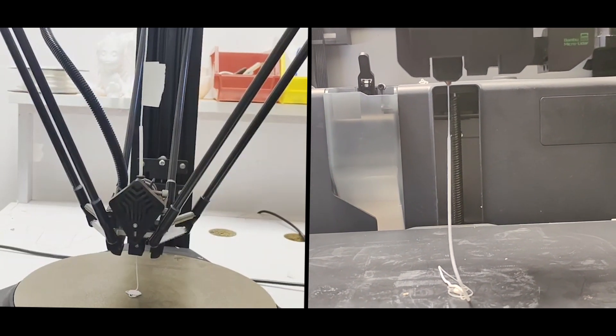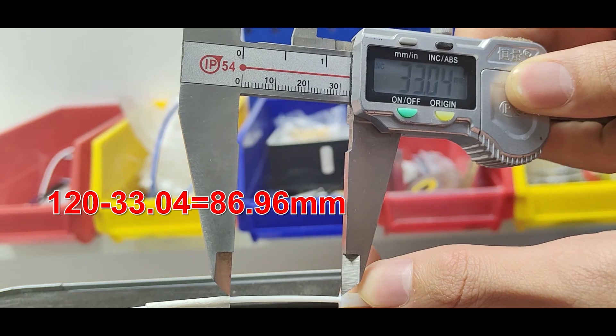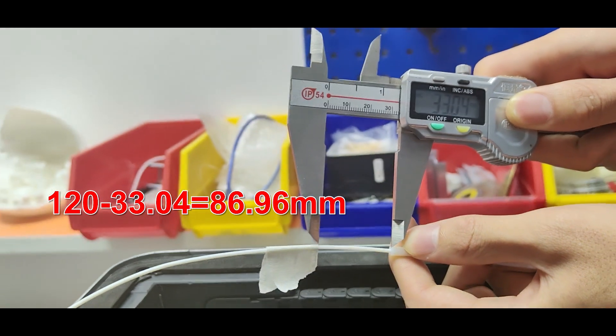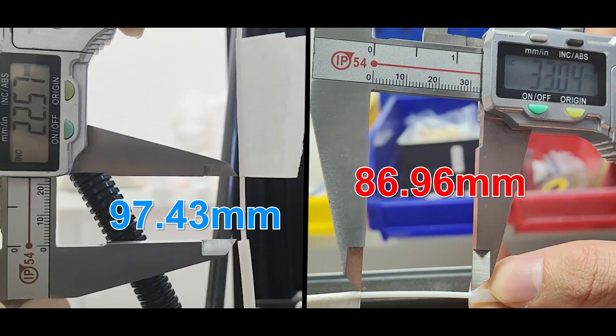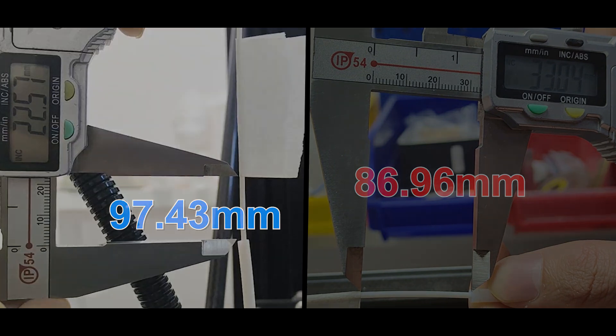The V400 actually extrudes 97.43 millimeters and the X1 actually extrudes 86.96 millimeters, which clearly shows that the melting rate of the V400 is much higher, meaning it allows for higher printing speeds.